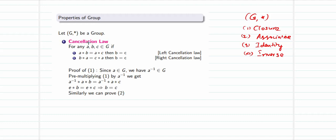Assuming G star is a group, the cancellation law holds. For any elements a, b, and c belonging to G: if a★b = a★c, then b = c — since a on the left can be cancelled, this is the left cancellation law. Similarly, if b★a = c★a, then a on the right can be cancelled, giving b = c, which is the right cancellation law.